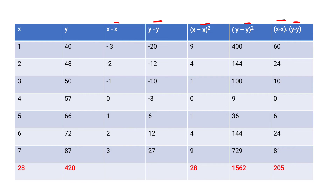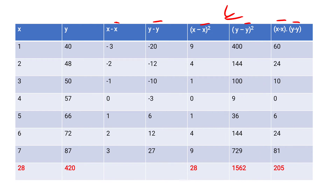Next, square all the (y − ȳ) values: (−20)² = 400, (−12)² = 144, (−10)² = 100, (−3)² = 9, 6² = 36, 12² = 144, 27² = 729. Then find Σ(y − ȳ)² by adding: 400 + 144 + 100 + 9 + 36 + 144 + 729 = 1562. So Σ(y − ȳ)² = 1562.